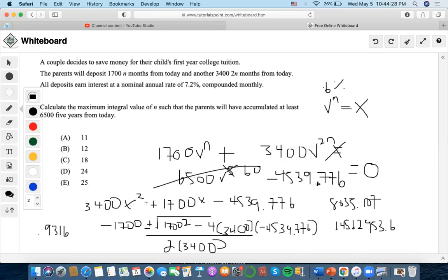Another thing is I could do negative 1700 minus 8035.107, which is negative. We don't want a negative X.